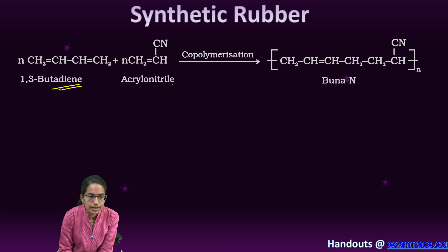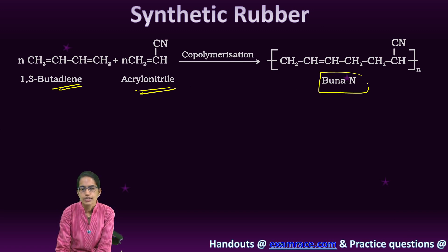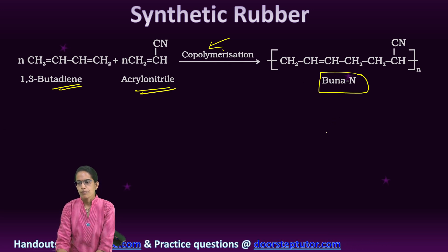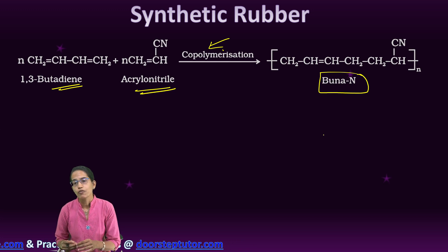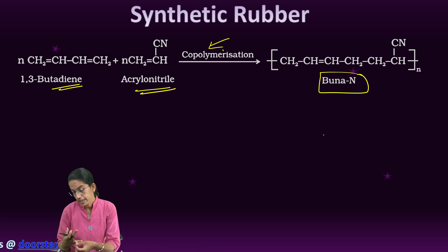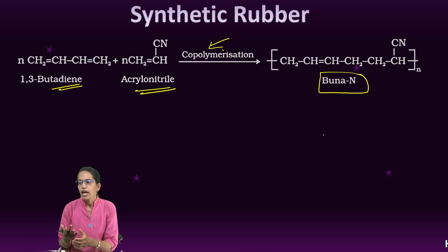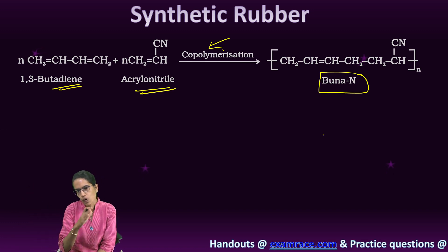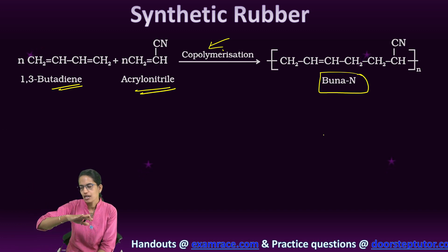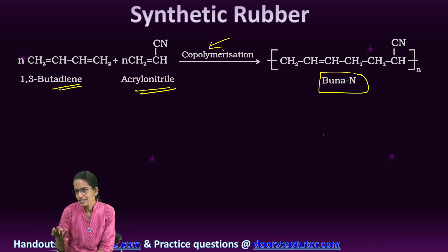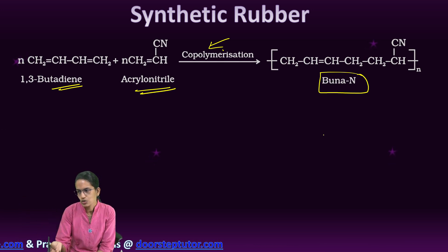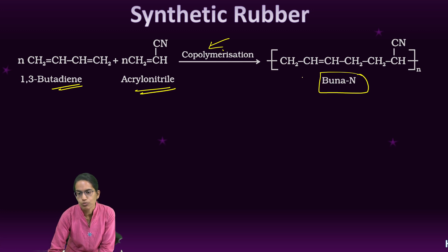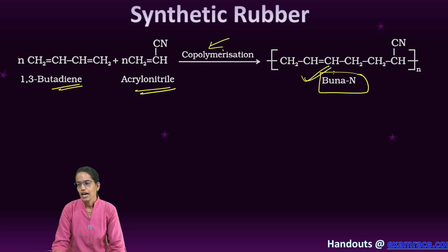The next synthetic rubber is Buna-S. Under Buna-S, butadiene reacts with acrylonitrile to form Buna-S, and this is a copolymerization. The most important property of Buna-S is that it is resistant to the action of any lubricating oil, resistant to organic solvents, and resistant to petroleum. Therefore, it is used in oil tanks, for sealing oil, and in the linings of tanks. Buna-S has definitely higher usage due to these properties.